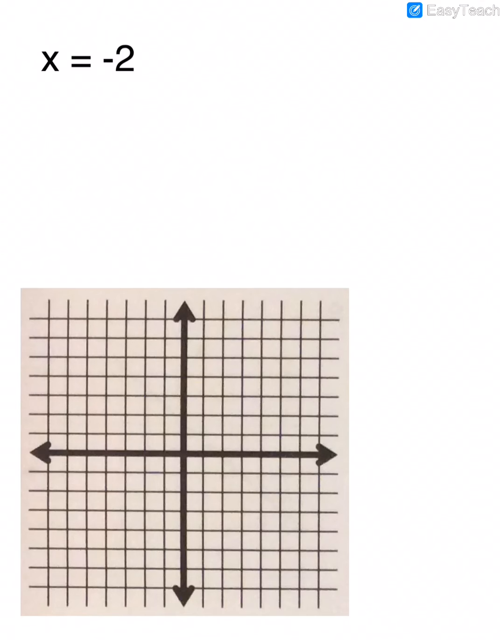Here we have x equals negative 2. So it's going to cross through the x axis at negative 2. So on my x axis, I'm going to go to the left two spaces and put a dot. And then because we know VUX, that tells us that since there's only an x in the equation, it's going to be a vertical line. So we draw a vertical line through x at negative 2.